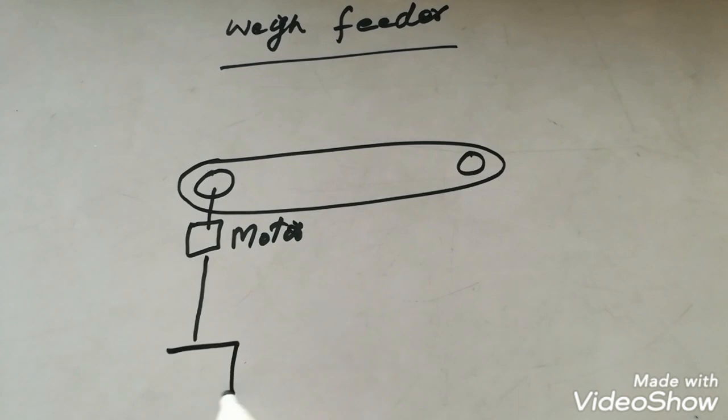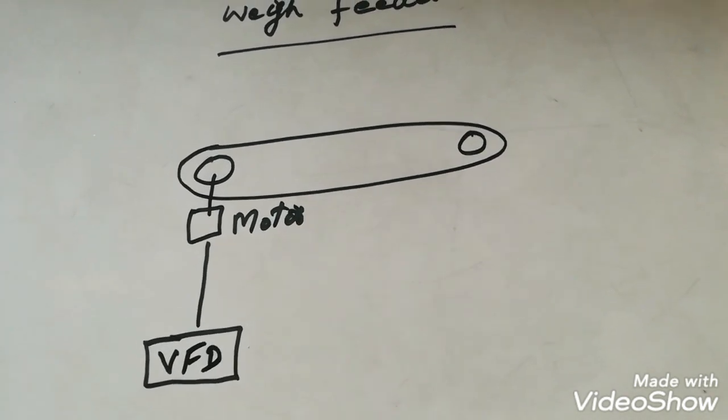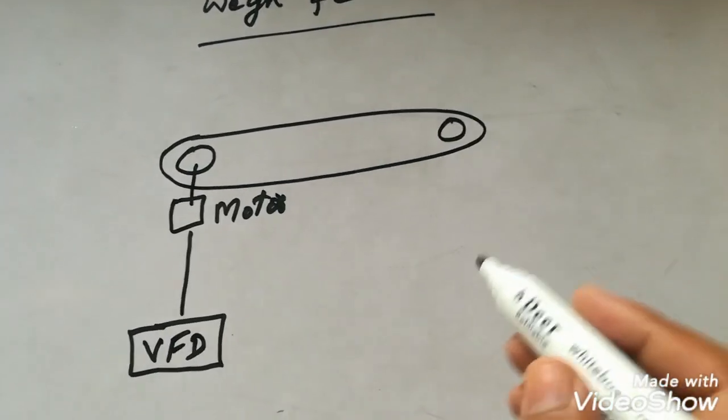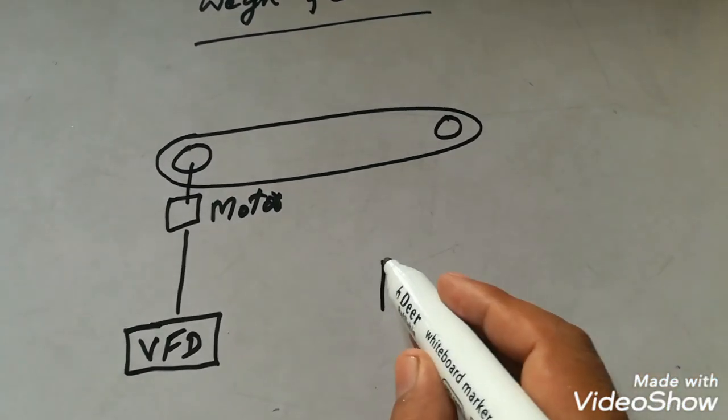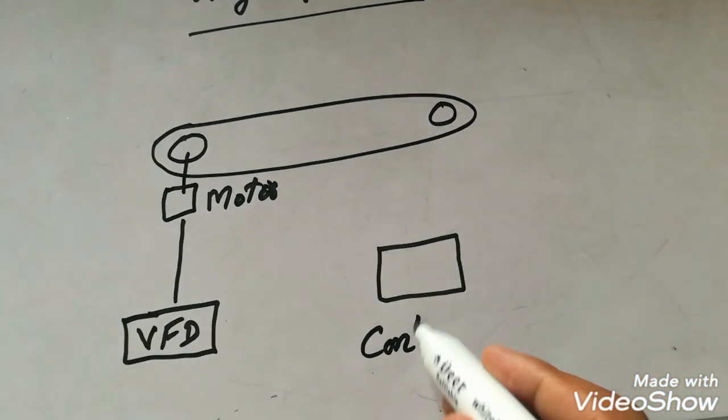Here you can see a motor is used to run the belt. This motor is controlled with the VFD. You know VFD is a variable frequency drive.